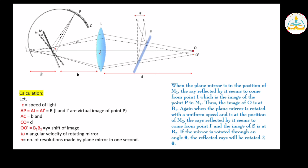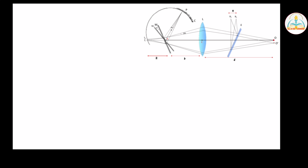If the mirror is rotated through an angle theta, the reflected rays are rotated through 2 theta. From the figure, I I-dash is equal to R into 2 theta, because theta equals arc length divided by radius. So the arc length is I I-dash and the radius is R. Therefore 2 theta equals I I-dash over R, giving I I-dash equals R times 2 theta. Let this be equation 1.